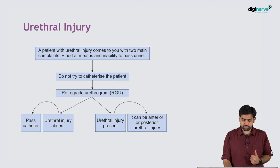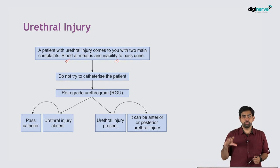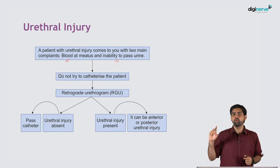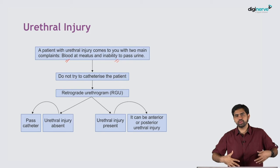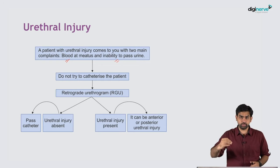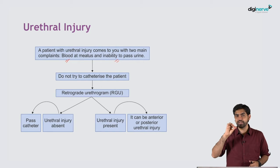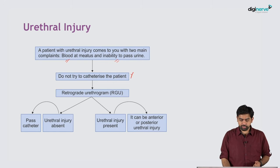A patient with urethral injury comes with two main complaints: blood at the urethral meatus and inability to pass urine. Whenever a patient has a severe desire to pass urine but cannot, with severe pain in the suprapubic region and blood at the meatus, you should suspect a urethral injury.